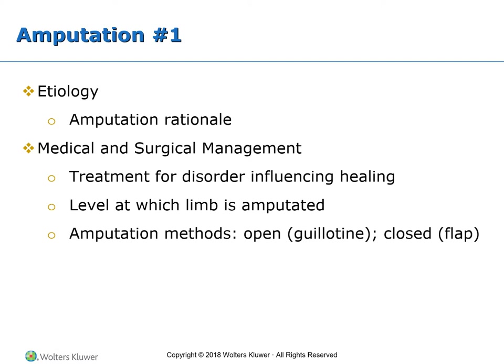Unless emergency surgery is performed, the client is treated for any disorder that may influence healing. When amputation must be performed as a lifesaving measure, factors that help the surgical team decide at what level to amputate include: the amount of tissue that must be removed to eliminate the disorder, the level at which blood supply is adequate, the number of joints that can be preserved, and the length of residual limb that will promote fitting a prosthesis. Commonly planned amputations include below the knee, above the knee, below the elbow, and above the elbow. The surgical objective is to create a gently tapering stump with muscular padding over the end.